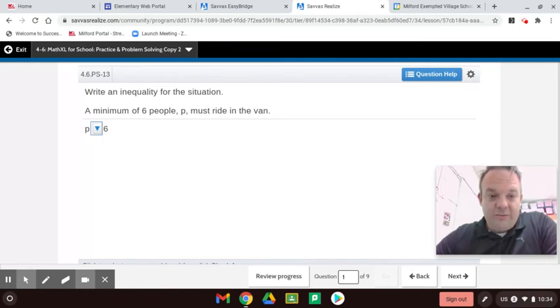You could have more, but you've got to have a minimum of six people. So that means the number of people that can ride the van would be greater than or equal to six. Greater than or equal to six. That means it includes six or more. Let's see if we get it right.